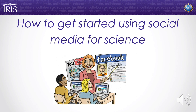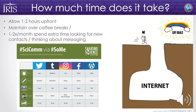Hopefully I've convinced you to use social media. How do you get started? Allow one to two hours up front. Choose a platform — Twitter, Tumblr, Instagram, Facebook, WordPress, whatever. You may already be using some of these, just not posting about science. Think about what you're trying to do: figure out who your audience is and what you want to talk to them about. If you want to talk to high schoolers, Instagram is the right demographic. If you have great videos, YouTube is the place. If you want to reach the over-65 demographic, Facebook is the place to go. After that initial setup, you can maintain it over coffee breaks, and once or twice a month go through, look for new contacts, think about messaging, and do a general assessment.